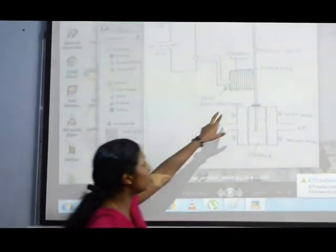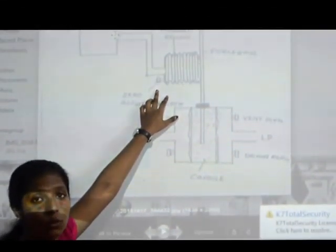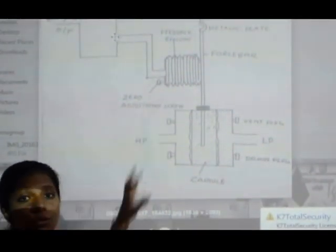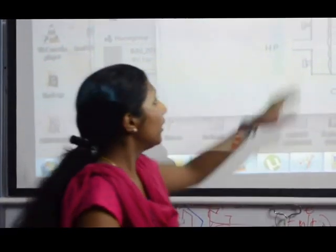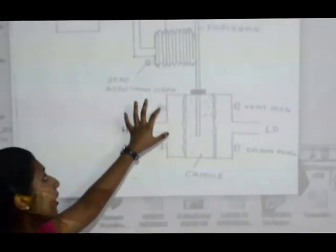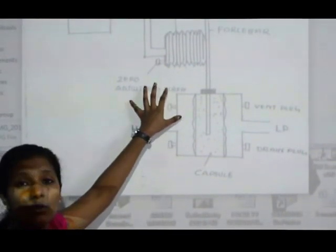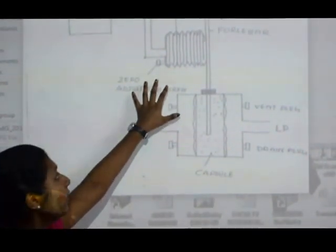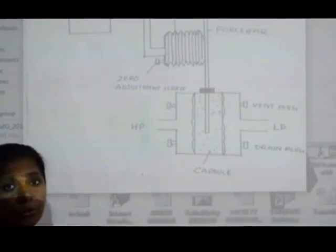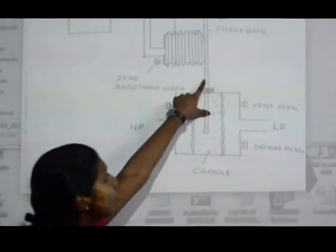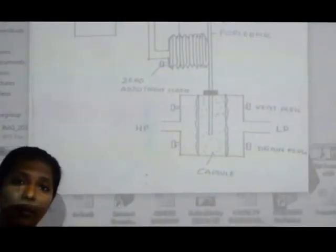Here we are able to see a feedback bellows. In this bellows, we are having a screw. Here only we are able to do zero calibration. Connected to this feedback bellows, we are having a zero adjusting screw. Here only we are doing our zero calibration. If you want to do span calibration, we need to adjust this force bar. This is what is actually happening inside a pneumatic transmitter.